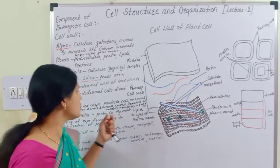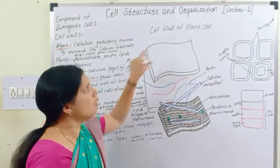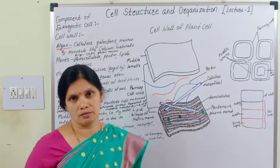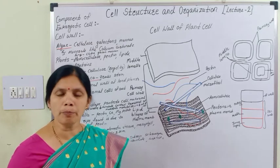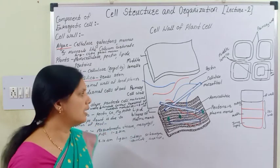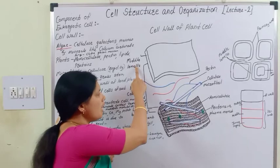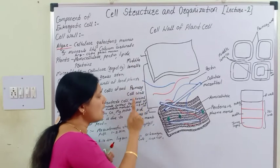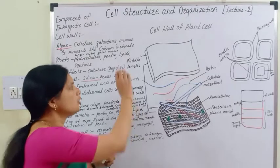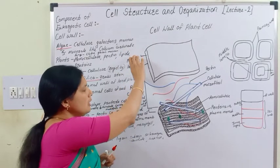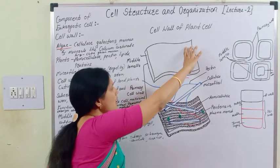So these are the different components of the cell wall. Here we discuss mainly about the cell wall of the plant cell. The plant cell wall is formed from three layers: the middle lamella, the primary cell wall, and the secondary cell wall.